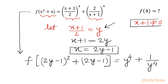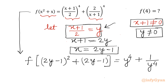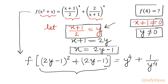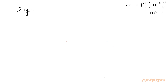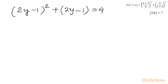Since x plus 1 is non-zero, from this equation y cannot be 0 either. Now, to find f of 4, we need to set the argument (2y minus 1) squared plus (2y minus 1) equal to 4, and then evaluate y to the power 4 plus 1 over y to the power 4, keeping in mind y is not equal to 0.